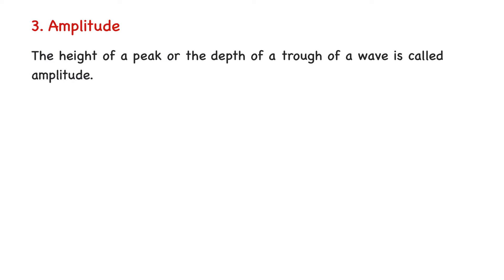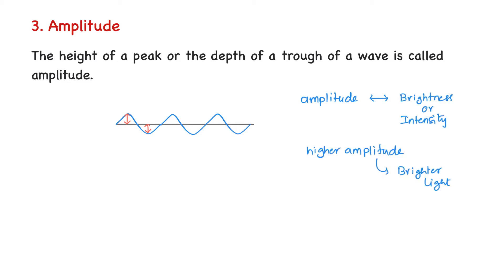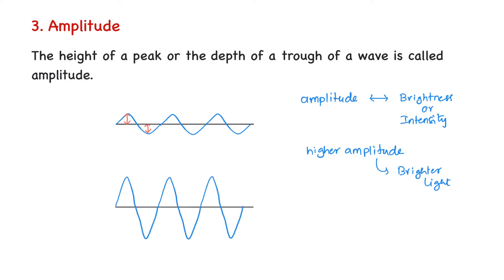The third characteristic of an electromagnetic radiation is amplitude. Amplitude is defined as the height of a peak or the depth of a trough of a particular wave. The amplitude of an electromagnetic radiation is related to its brightness or intensity. The radiation with a higher amplitude is brighter compared to the radiation with a lower amplitude. An electromagnetic radiation with a particular wavelength can have different amplitudes, and therefore different brightness values.